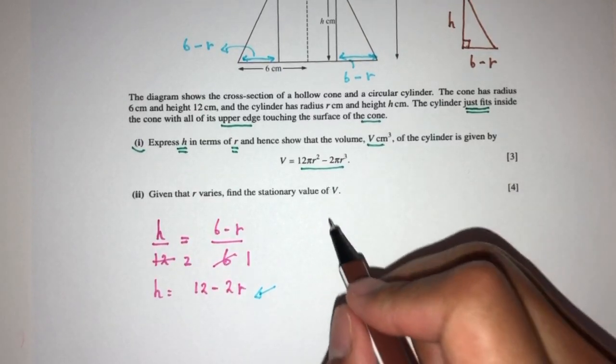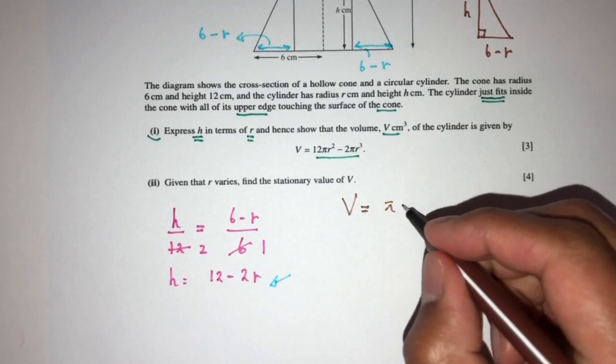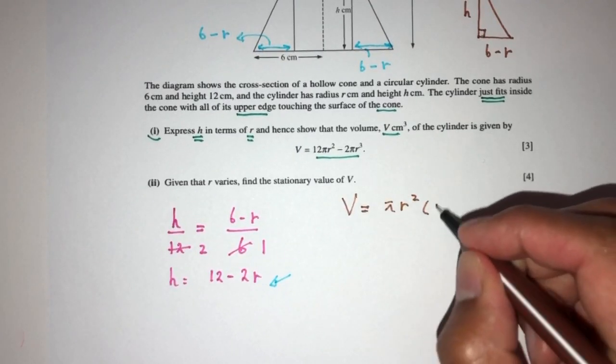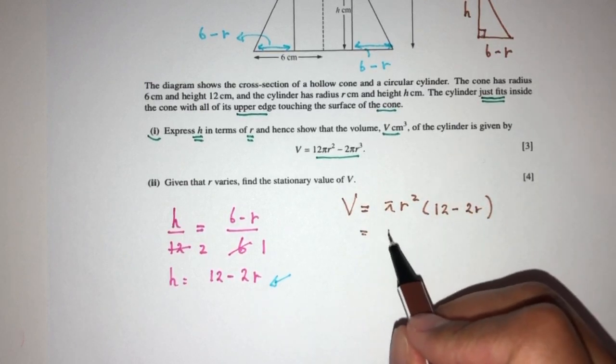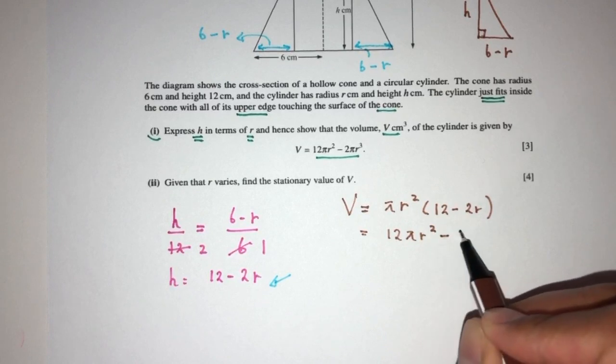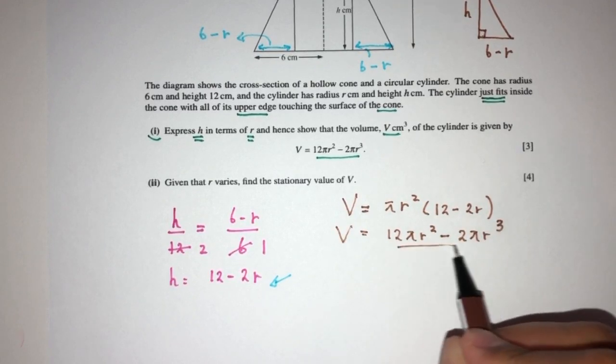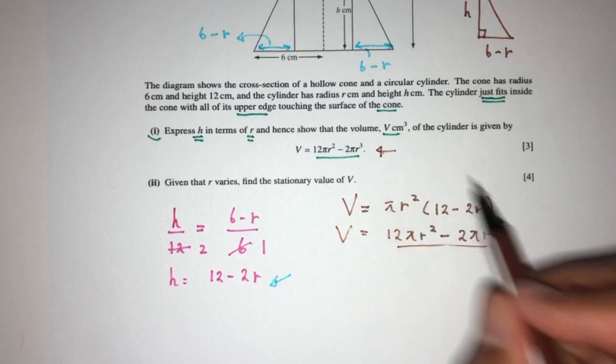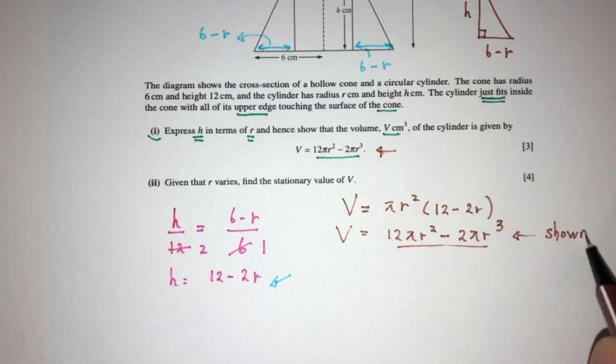Now finally, we have to find the volume. Volume has to be π R² H, so π is π, R² is R², and H is 12 minus 2R. That will have to be 12π R² minus 2π R³. This is shown as required.